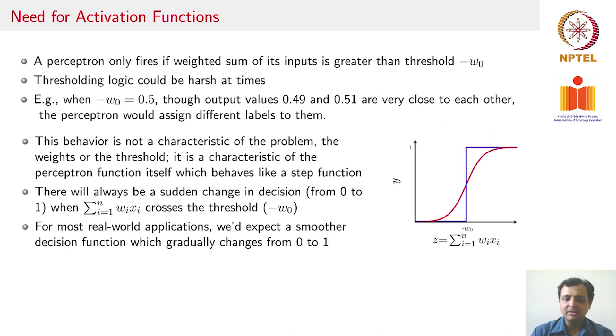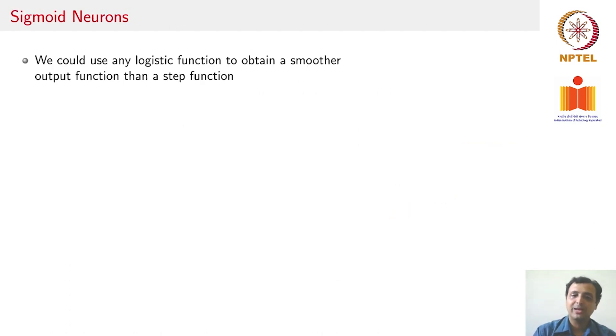Typically, this behavior does not occur in the real world. The behavior is not a characteristic of the problem; it is more the characteristic of using a step function as a thresholding function. In the real world, you generally expect a smoother decision function such as the one shown in red here. How do we handle this? The way we handle this is to introduce activation functions, which aim to replace the threshold function with more smoother functions.